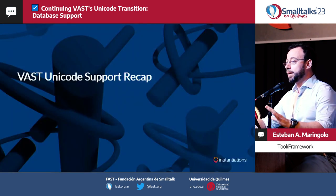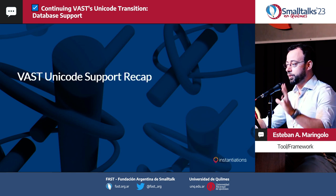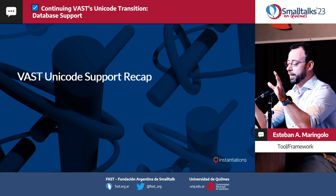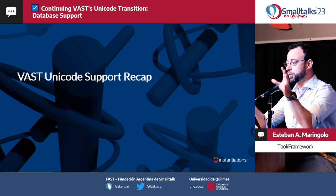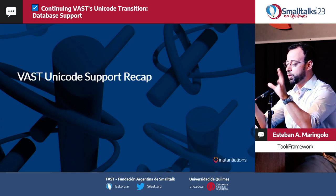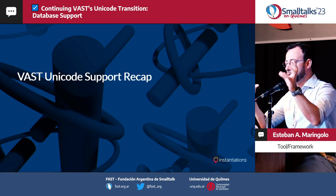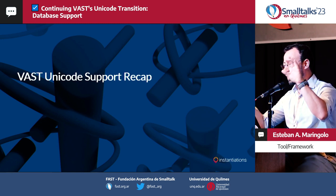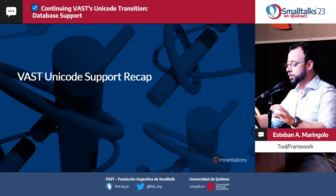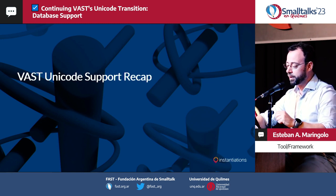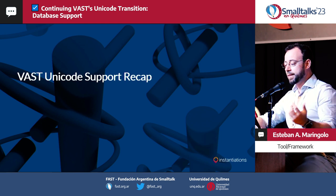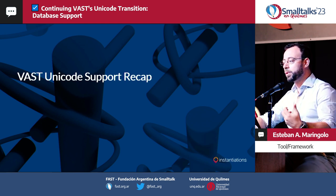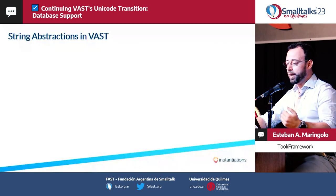So now we've made a clear distinction between what a code page is and how Unicode encoding works. Basically, with a code page, the code page and encoding were kind of the same thing. Unicode separates that — it specifies what a character is and how it is going to be encoded. So let's do a quick recap on how we support Unicode in VAST.